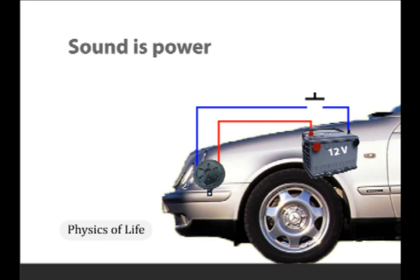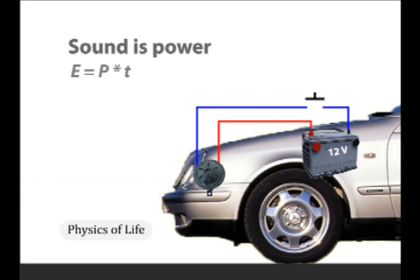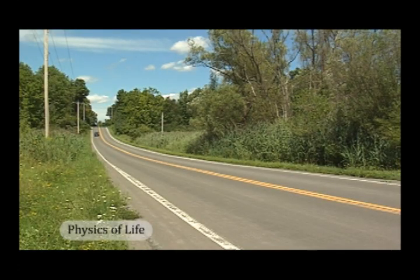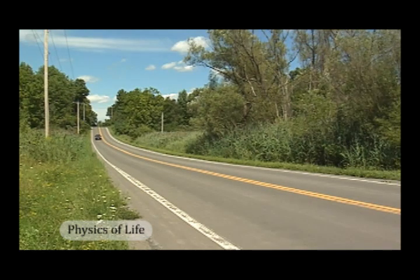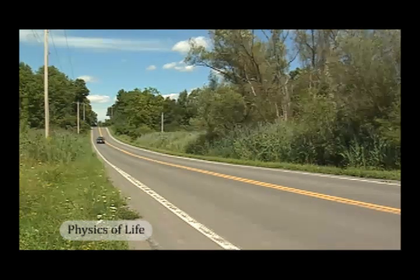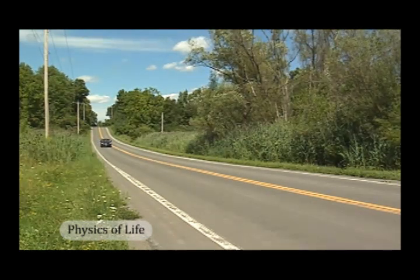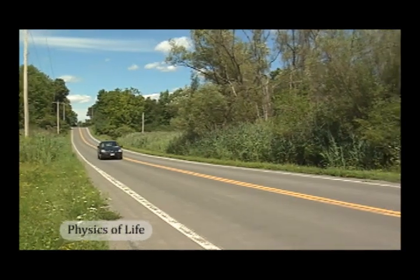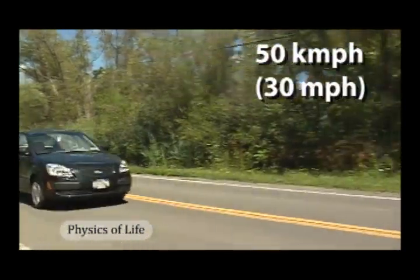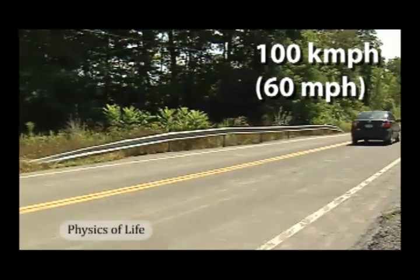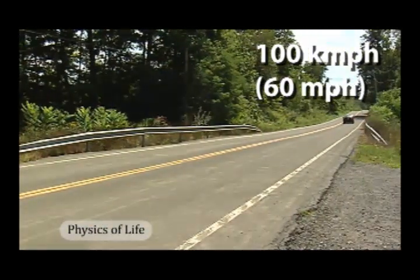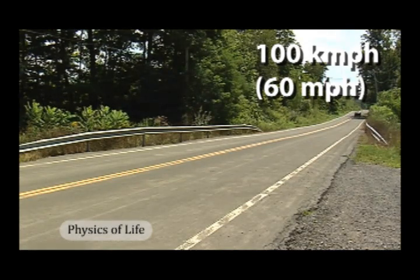If the switch is depressed for one second at 12 watts — or 12 joules per second — the sound wave is carrying away 12 joules of energy. With that, let's go to the experiment. The experiment is pretty straightforward: we drive along a road sounding the horn as we go by, and record the sound at the camera and also in the car. We do this at three speeds — 50, 75, and 100 kilometers per hour — corresponding to about 30, 45, and 60 miles per hour.